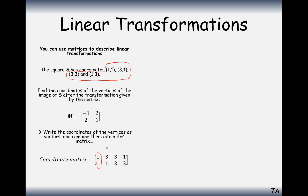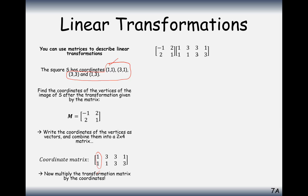The coordinates slot into their matrix vertically rather than horizontally. Now we take the transformation matrix and multiply by the coordinate matrix — always in this order: transformation matrix first, coordinate matrix second. Don't ever get those two the wrong way around. In this case we have a 2×2 times a 2×4, so we can multiply those together.